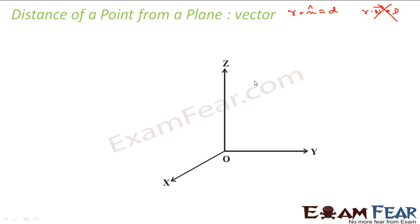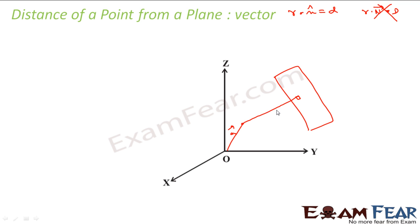So let's start. We have some point A, and we have to find the distance of some plane from this point A — that means we have to find this distance. To find this distance, the equation of the plane is r dot n̂ is equal to d. Let's suppose this distance is d_A, the distance of A from the plane.